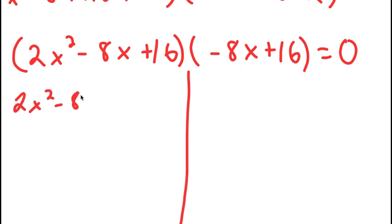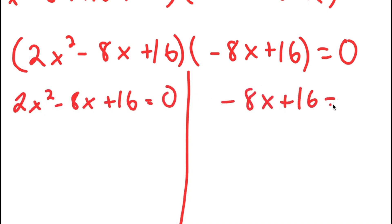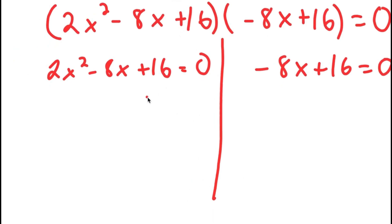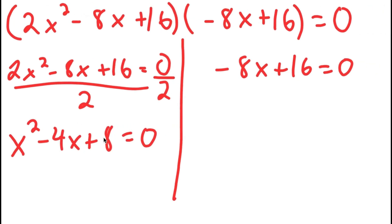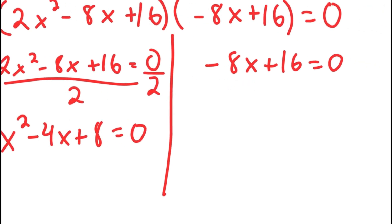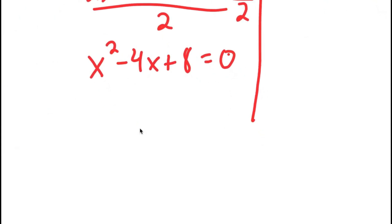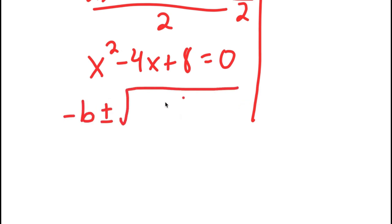I have 2x² − 8x + 16 = 0, and −8x + 16 = 0. Dividing both sides of the first equation by 2, I now get x² − 4x + 8 = 0. I can use the quadratic formula to solve this, since it's a quadratic equation. The quadratic formula is: negative b plus or minus the square root of b² − 4ac, all over 2a.